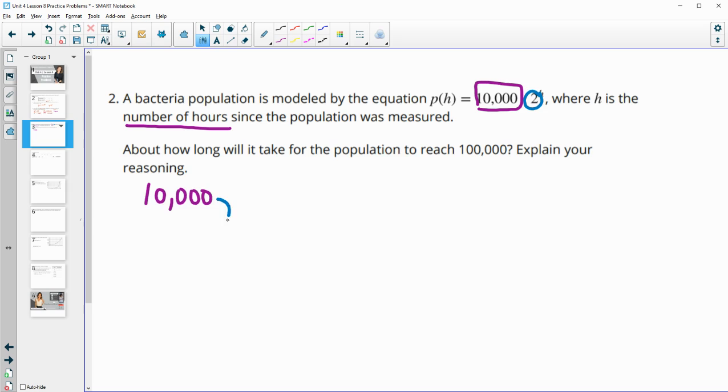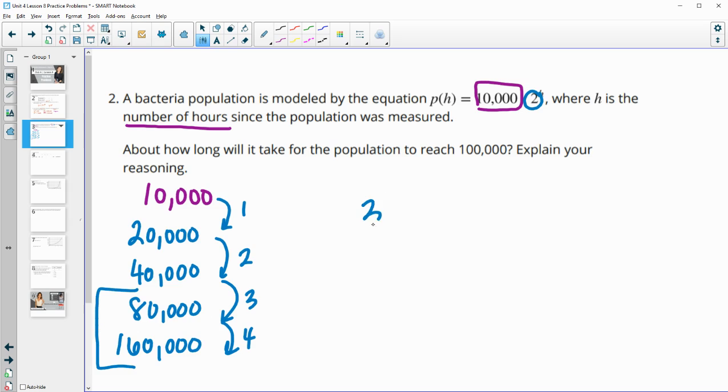So after one hour, this doubles to 20,000. After two hours, this doubles again to 40,000. After three hours, it goes to 80,000. And then after four hours, it goes to 160,000. So that means somewhere between here, it hits 100,000. So somewhere between three and four. So that number of hours is going to be between three and four hours.